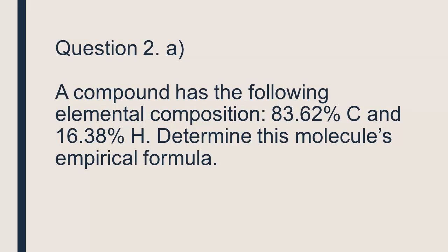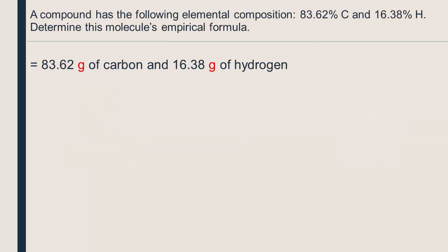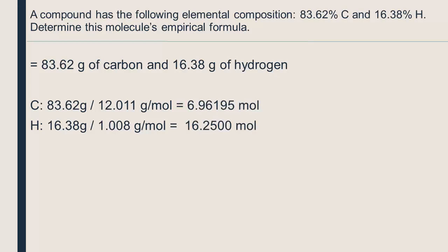Like in the first example, we assume that we have 100 grams of the compound. That means we have 83.62 grams of carbon and 16.38 grams of hydrogen. We divide the mass by the atom's molar mass to get the number of moles. Then we divide both numbers by the smallest number to get a simple ratio between the elements.